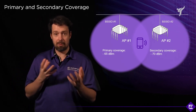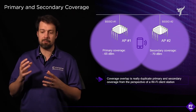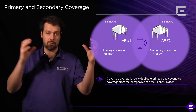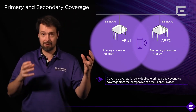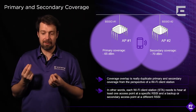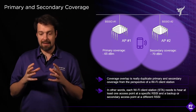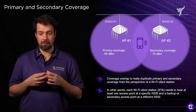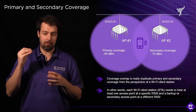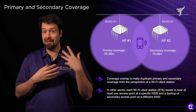When we talk about primary and secondary coverage, the overlap between the two is essentially duplicate primary and secondary coverage from the perspective of a Wi-Fi device — how the Wi-Fi device sees those two access points, the primary one and the secondary roaming candidate. Each Wi-Fi station needs to hear at least one more access point in addition to the one it's currently connected to, and that access point should be at least -70 dBm or better, because when you move closer, that coverage will improve and only get better after you roam.